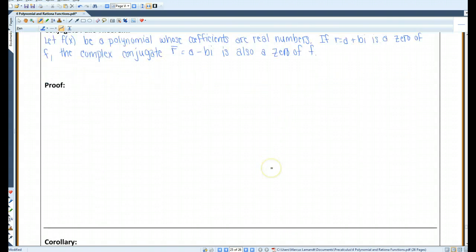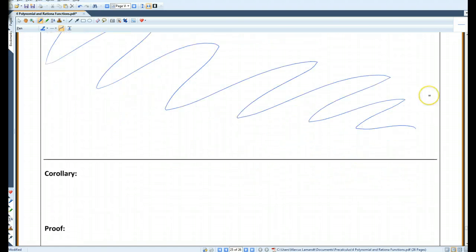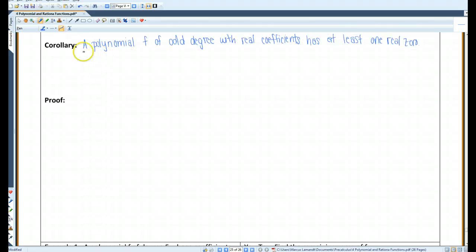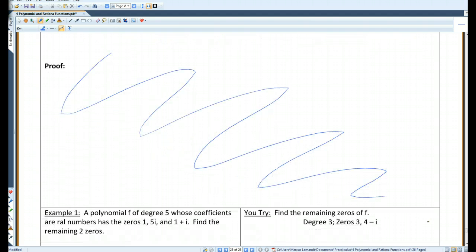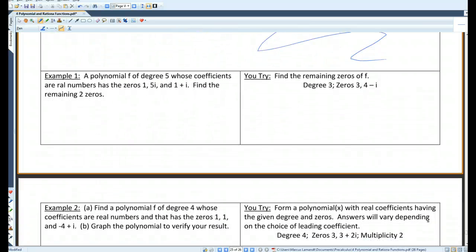We're actually going to skip over this proof. It'll make more sense when we use this as an example. There's a corollary to this: A polynomial f of odd degree with real coefficients has at least one real zero. And once again, we're going to skip over the proof.